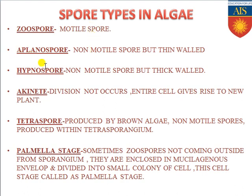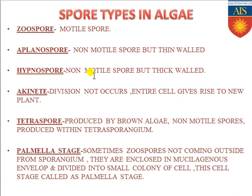The next type of spore is aplanospore. These are non-motile spores because they do not have flagella. They can also be called non-flagellated spores, and they have a thin wall. Next there is another category known as hypnospore. They are also non-motile spores but they have a thick wall.